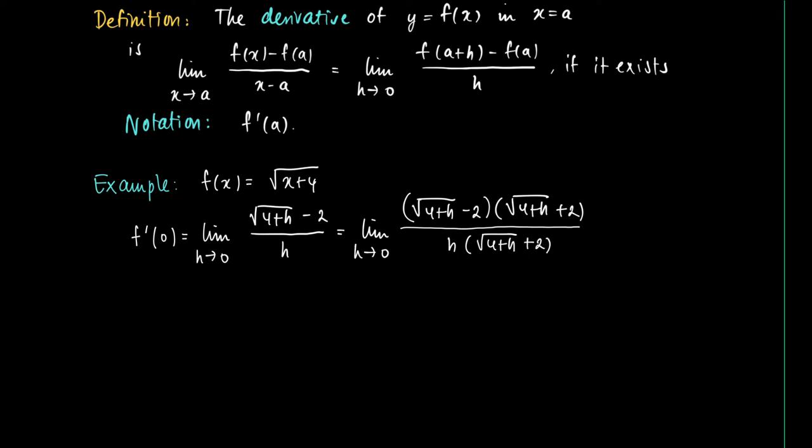Why are we doing this? Now the numerator becomes elegant. We get 4 plus h minus 4, which equals h. Then we divide by h times the square root of 4 plus h plus 2.